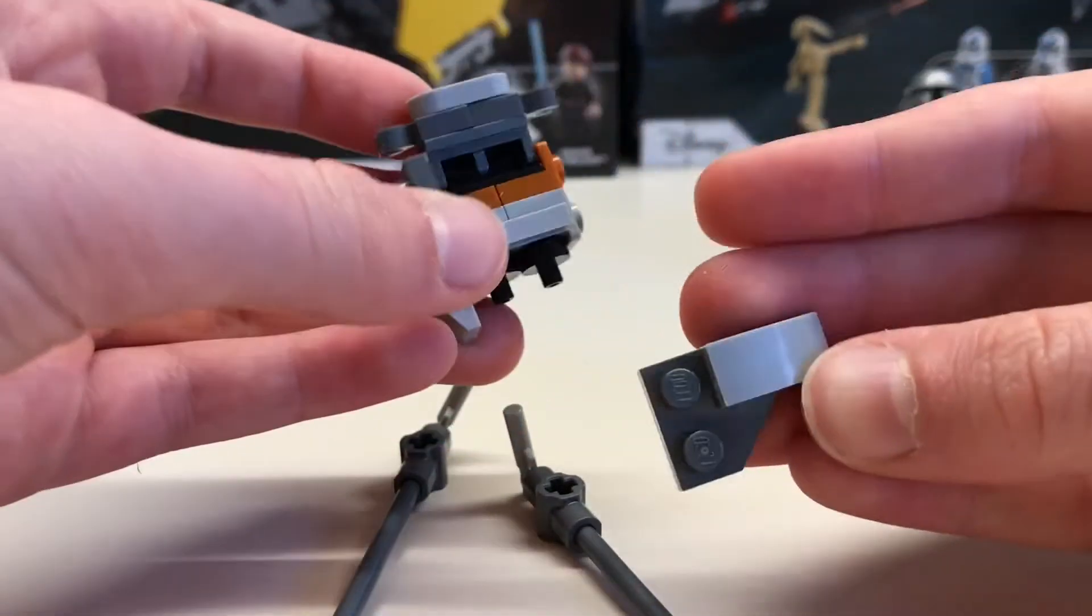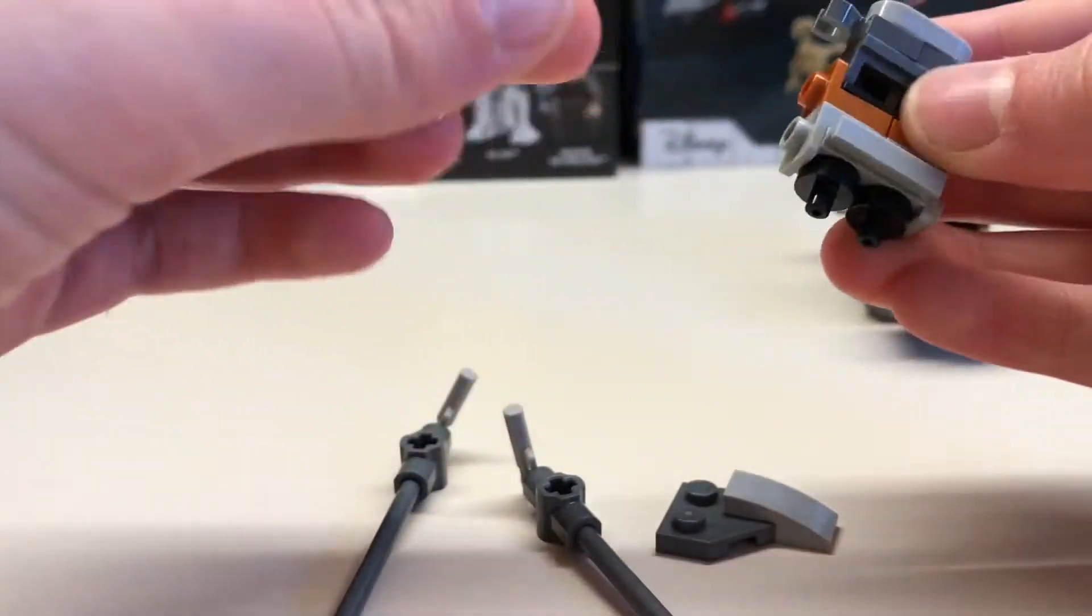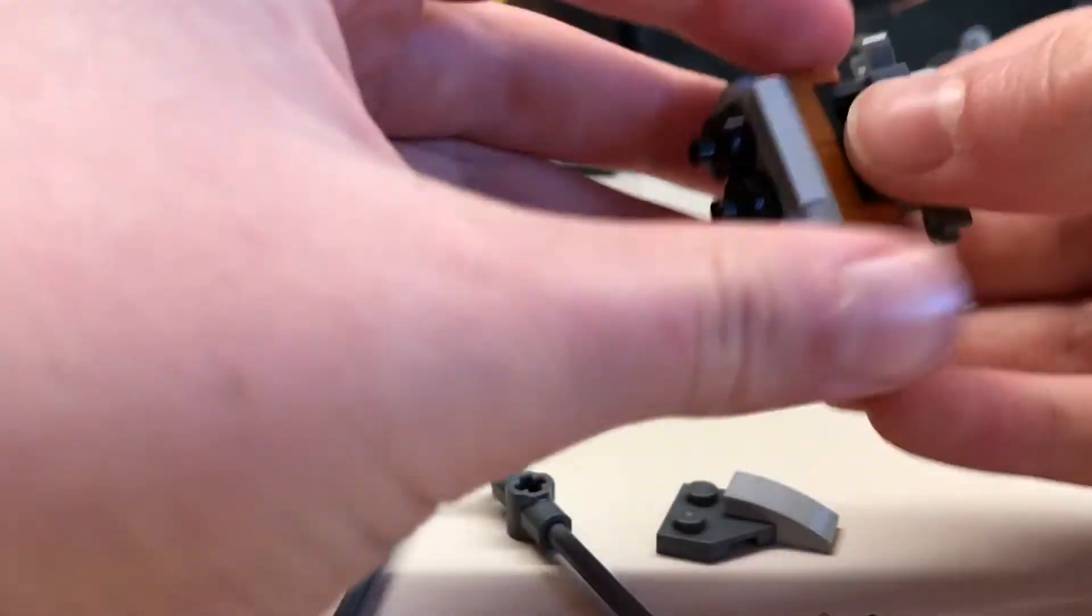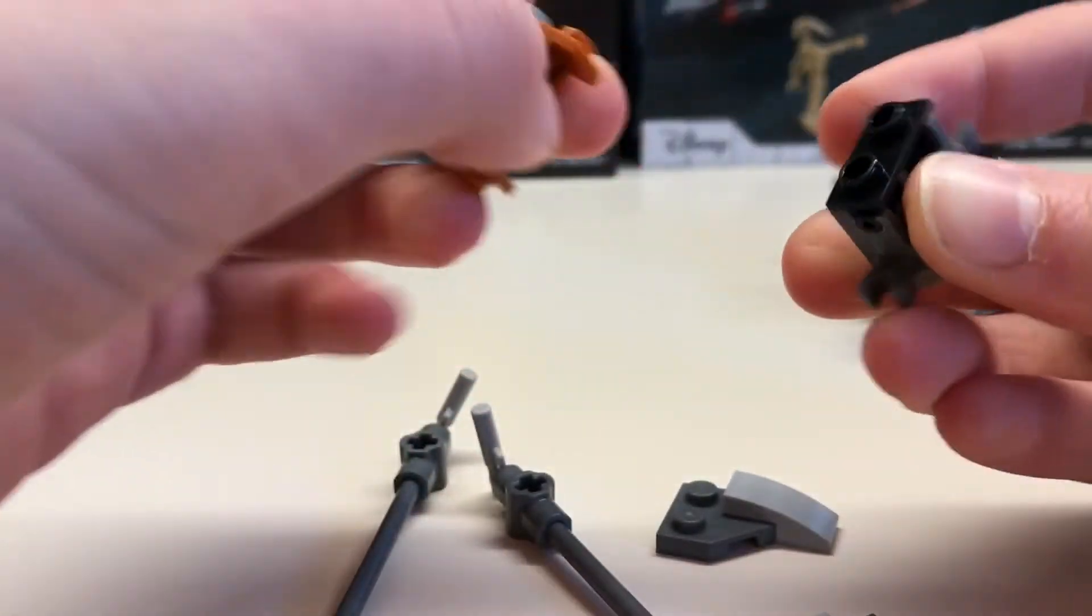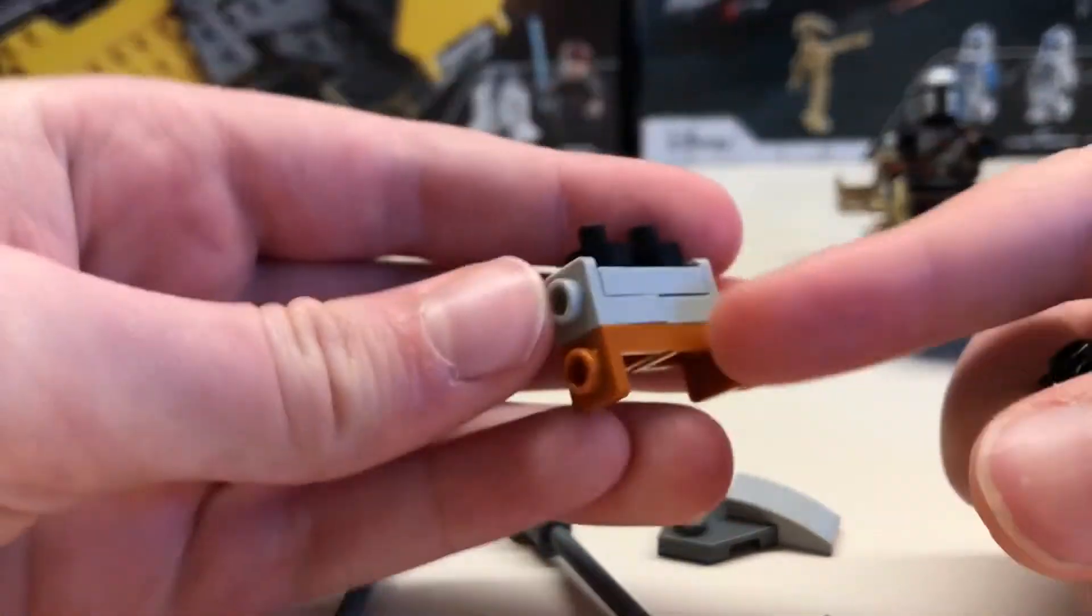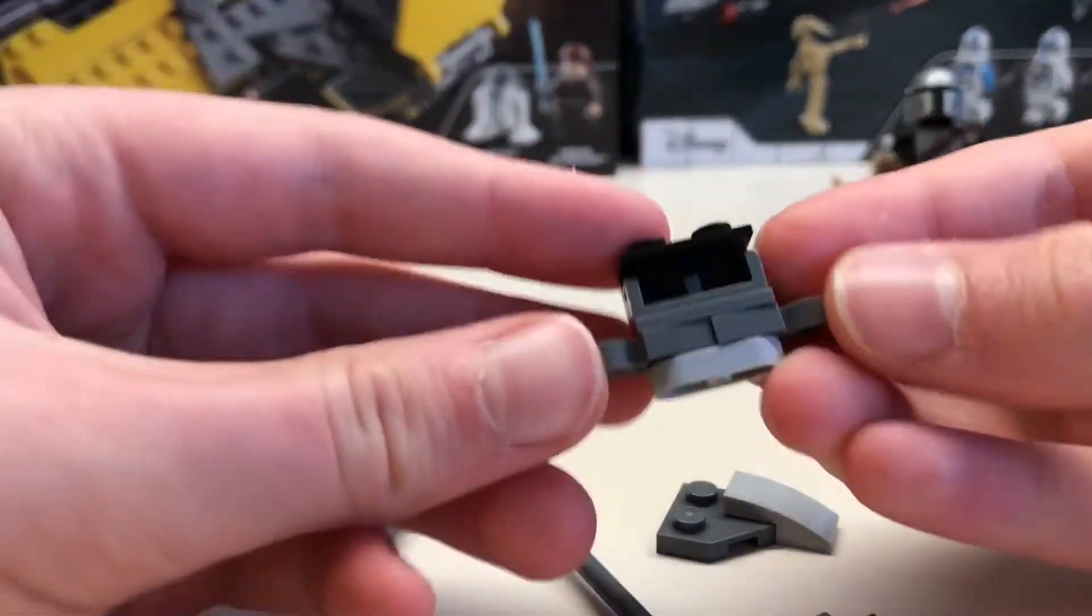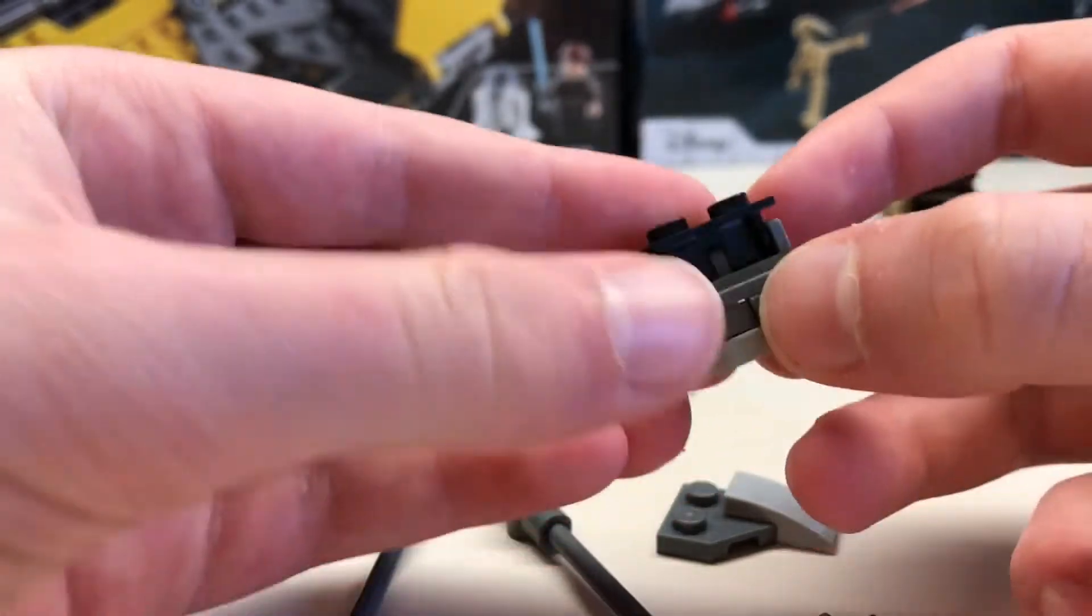Then take off these side pieces. You need these. Take off this front part. You don't need that, but you do need this little assembly here.